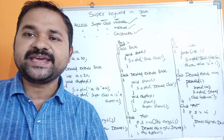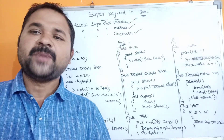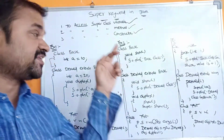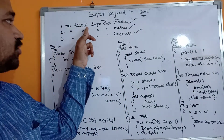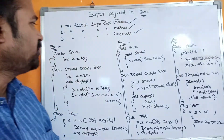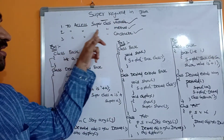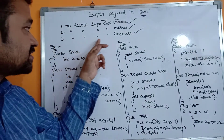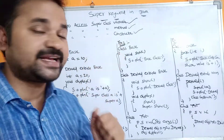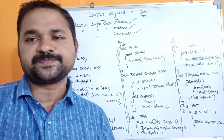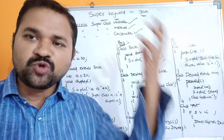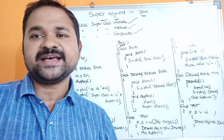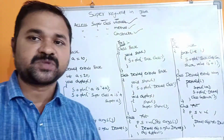Now let's see about the super keyword in Java. There are mainly three advantages with the super keyword. The first advantage is to access a super class variable. The second advantage is to access a super class method. The third advantage is to access a super class constructor. So the super keyword allows us to access a super class variable, super class method, as well as super class constructor.